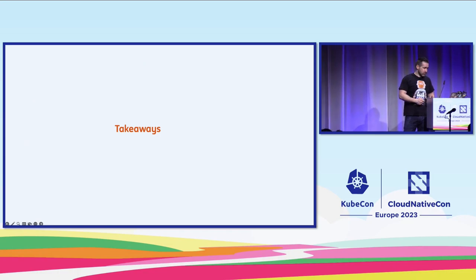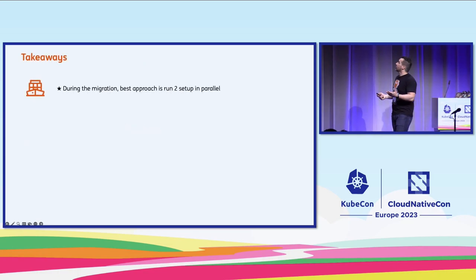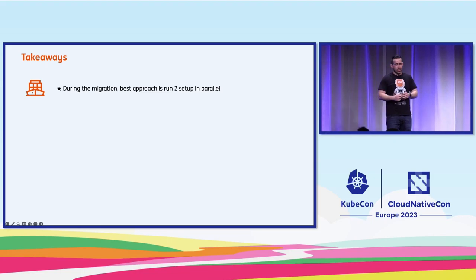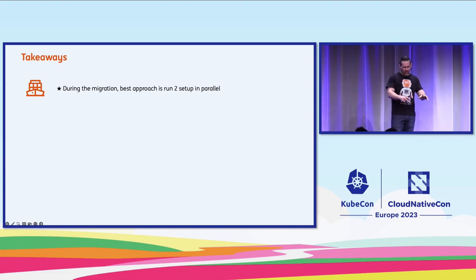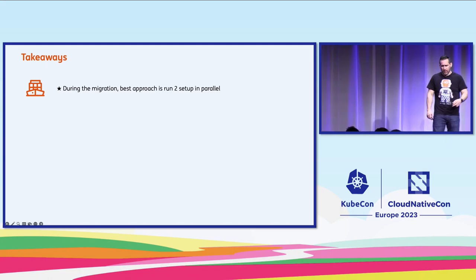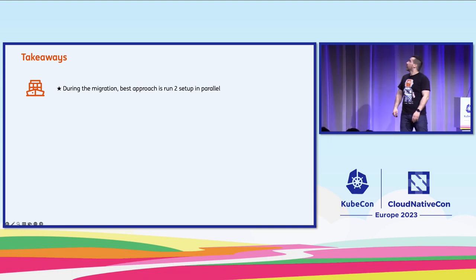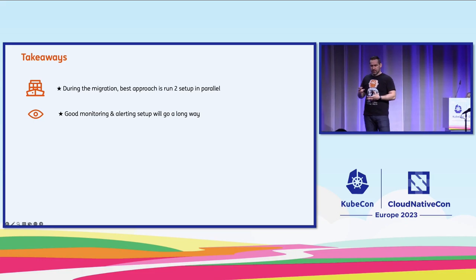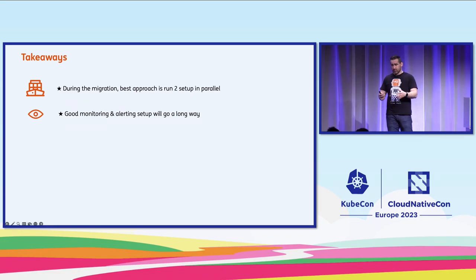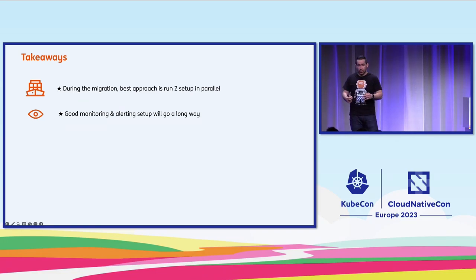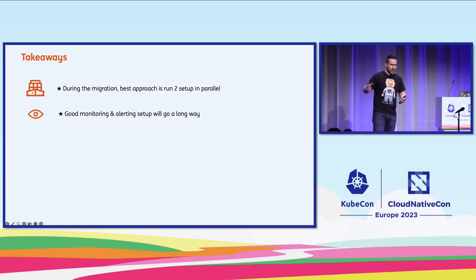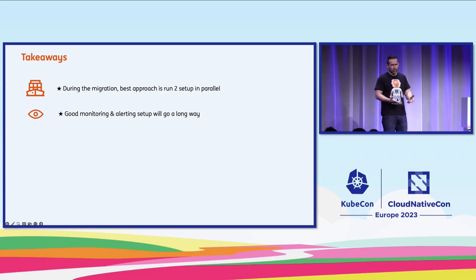Some takeaways from the whole journey: as with every migration, the best approach is to keep running both setups in parallel. Don't try to extend your existing environments — this is going to be a completely different landscape. Start from scratch, verify that everything is working, then simply switch the traffic over and shut the lights off in the old setup. Good monitoring and alerting will go a long way — you also want to know if something goes wrong in your new environment, so you don't keep building on top of something already broken at its core.